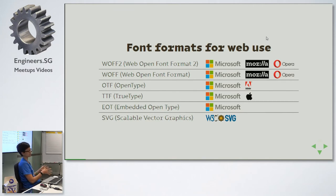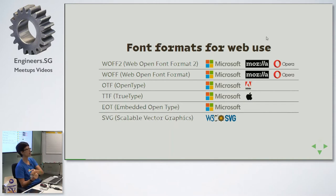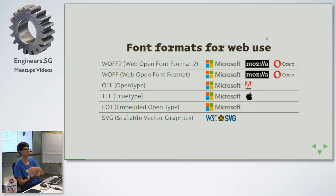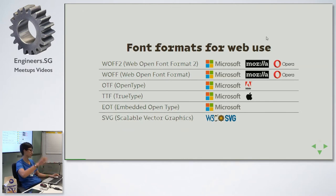We also have EOT — Embedded OpenType — which was Microsoft's proprietary format they proposed for the web. When they submitted it to the W3C it got rejected because it was proprietary. Then came WOFF, the Web Open Font Format, which involved Microsoft, Mozilla, and Opera, and was accepted by the W3C as the web format. It's quite small in size, and WOFF2 has about 30% better compression than WOFF. That's why we have so many font formats.